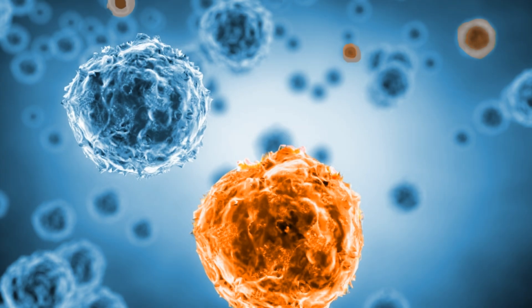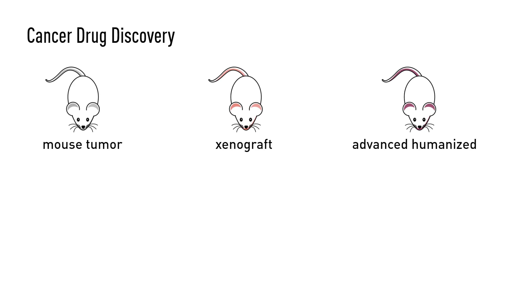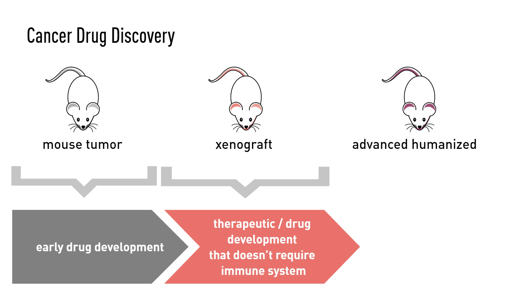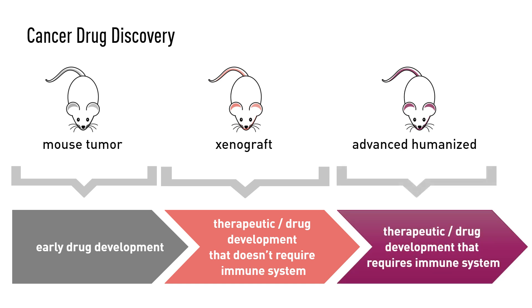Mouse models have played an integral role in the understanding of the biology of cancer. The models presented here are also used for the development of cancer therapeutics. Mice that contain mouse tumors are commonly used in early drug development. Increasing in complexity, drugs can be tested in xenograft models that can reveal the effectiveness of therapies that do not require an intact immune system. The most complex model is the advanced humanized model used for drug development that requires the engraftment of both a human tumor and a human immune response.